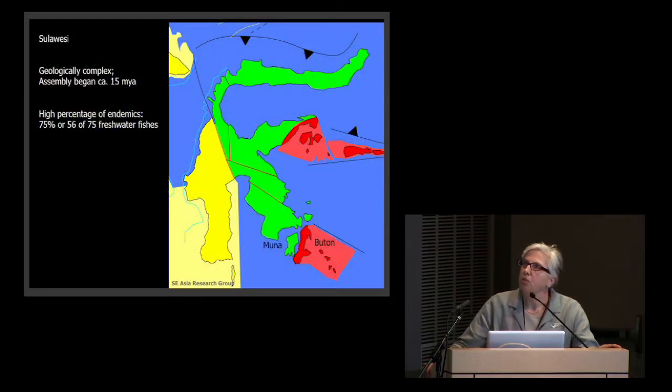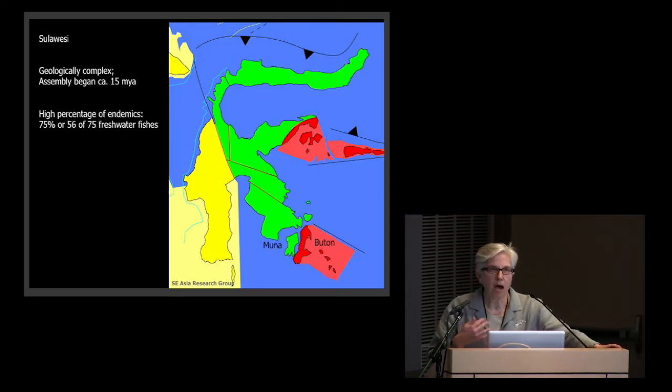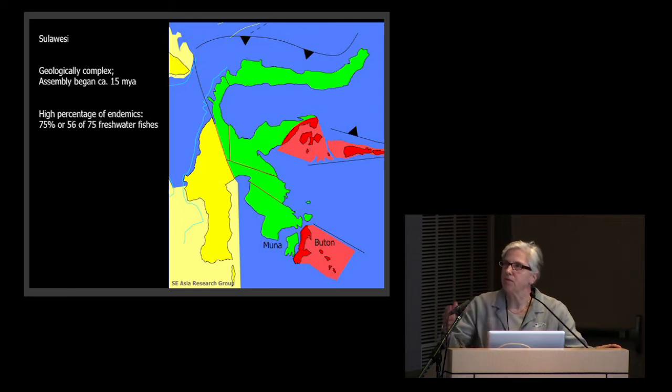Now, what I want to do is focus on Sulawesi, which is one of the most geologically complex areas in the most geologically complex area on Earth. Its assembly began about 15 million years ago, and as you can see, it has yellow, green, and red bits. Sulawesi is iconic within biogeographic studies because of its high degree of endemism, and no matter what group you look at, there are a high number of endemic species. And I've just given a metric here for the freshwater fishes. 75 percent of these species are endemic to Sulawesi. They live there and nowhere else on Earth.